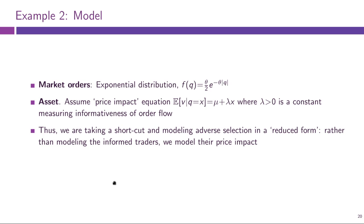Let us look at another example that avoids this artificial discreteness. We assume market order size Q is distributed according to an exponential distribution — CDF given by (theta/2) times the exponential of minus theta times the absolute value of Q. For simplicity, we assume a linear price impact equation: the conditional expectation of V given any order size X equals mu plus lambda·X, for some constant price impact factor lambda measuring the informativeness of order flow.